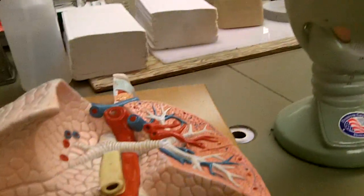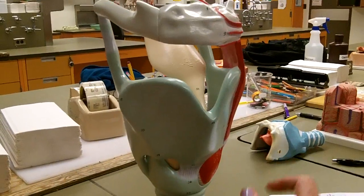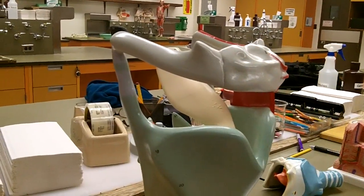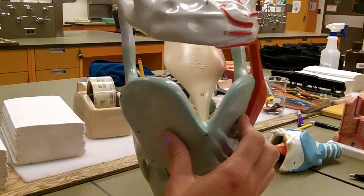We are going to cover some models on the respiratory system. Here you are seeing a model of the larynx. Up here is the hyoid bone, and down here you're seeing the thyroid cartilage.